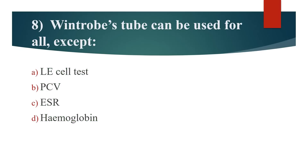Eighth question: Wintrobe's tube can be used for all except? Option A: Leisel test. Option B: PCV. Option C: ESR. Option D: Hemoglobin. Answer is Option D: Hemoglobin.